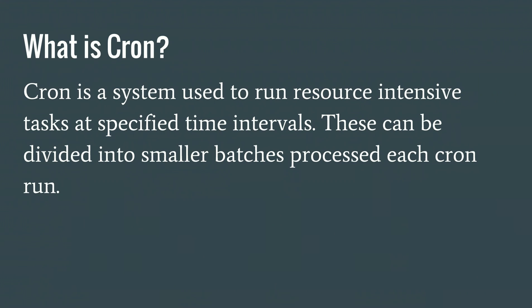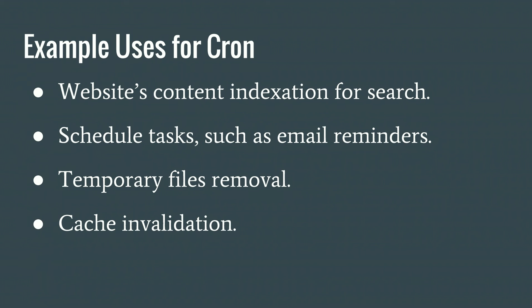What is Cron? Cron is a system that runs on certain intervals of time to do some expensive operations. For example, searching requires an index — Drupal knowing all nodes exist. That index is created and updated by Cron. You can say 'run this every hour,' and Drupal will go through your website and update the index. Other Cron uses: scheduling tasks like sending emails every day at 8 a.m., removing temporary files, or evaluating cache.